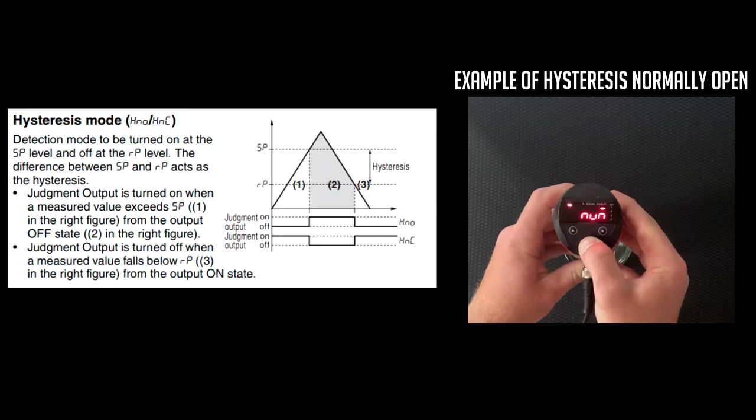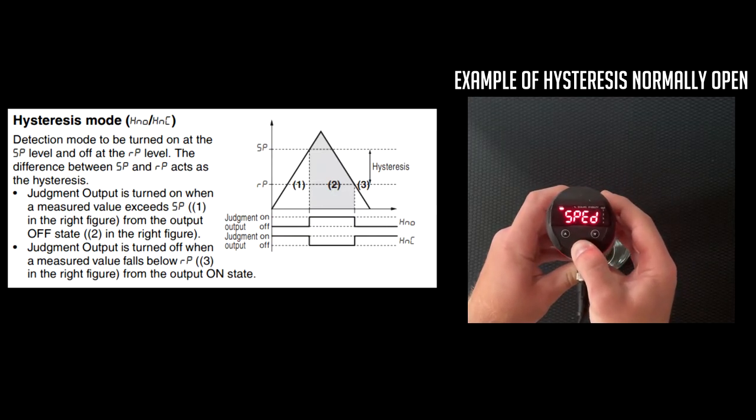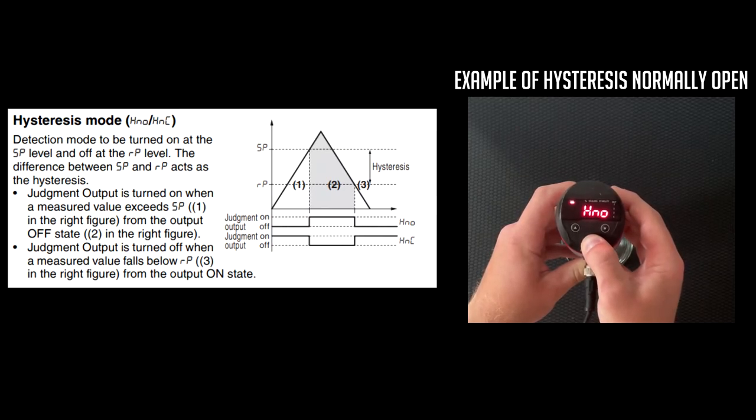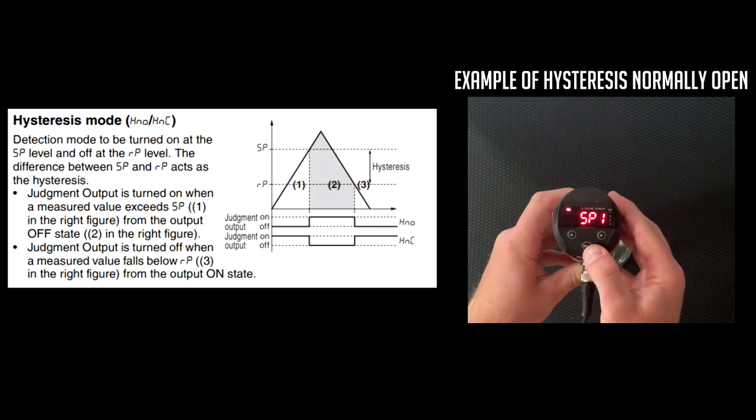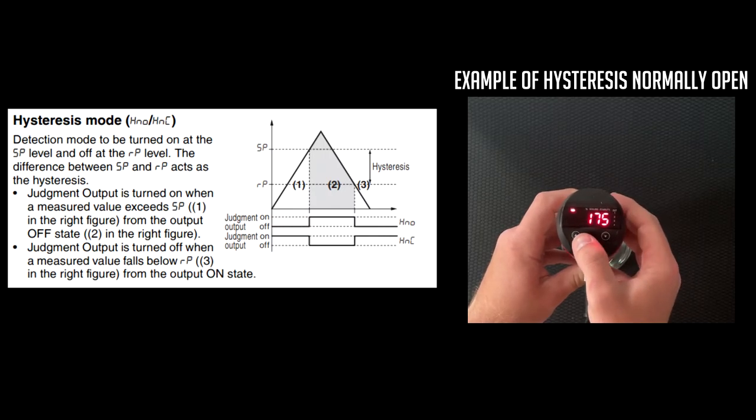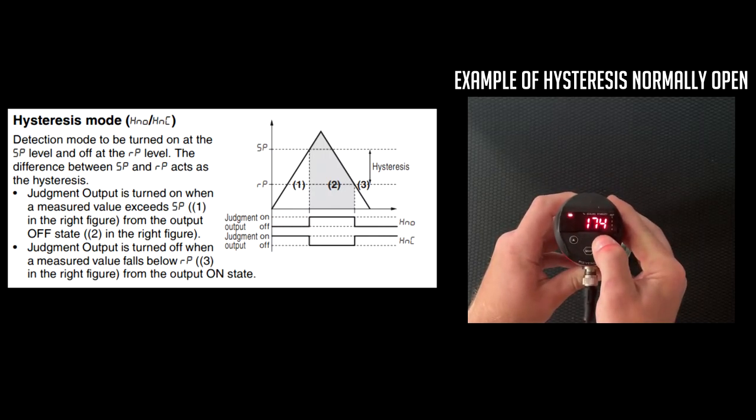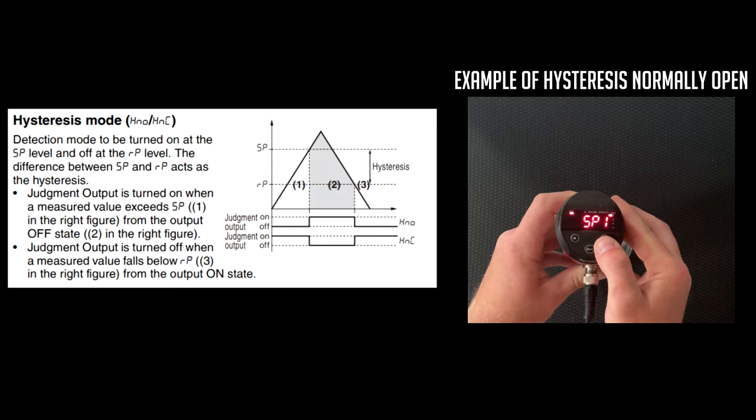To see which detection mode you're currently in, go through your basic settings, past your extended functions, until you see OU1, and that will tell you if you're an HNO or HNC. To then set your SP and your RP, you're going to go into the basic settings until you see SP1, set your level for SP1. Then go into your RP1 and set your level for your RP1.